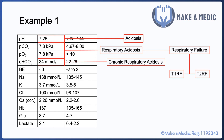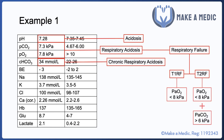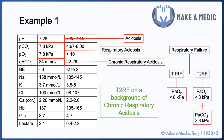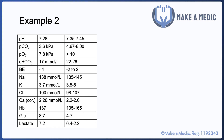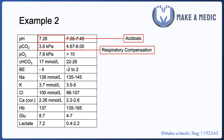Another point to bear in mind is the concept of respiratory failure. Respiratory failure can be defined as either type 1 or type 2. In type 1 respiratory failure, we have a pO2 of less than 8 kilopascals. In type 2 respiratory failure, we have both a pO2 less than 8 and a pCO2 greater than 6. This example would represent type 2 respiratory failure on a background of chronic respiratory acidosis.